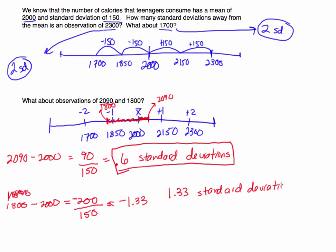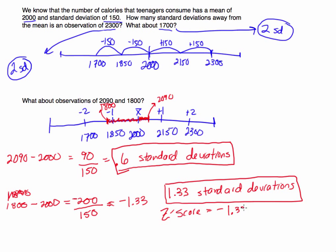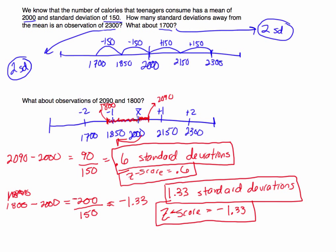Standard deviations and z-scores are very much related, but they are also slightly different. It is 1.33 standard deviations away, but the z-score would be negative 1.33. The difference between a z-score and the number of standard deviations away is that a z-score will also tell you the direction. So a negative 1.33 z-score tells you it's going to be to the left of the mean. If your z-score is negative, you are going to be to the left of the mean; if your z-score is positive, it would be to the right. So up here, the z-score associated with 2,090 would also be positive 0.6.